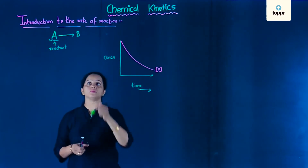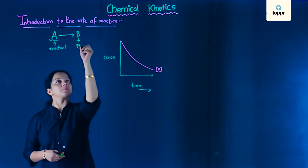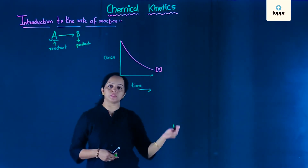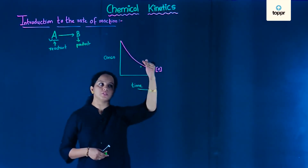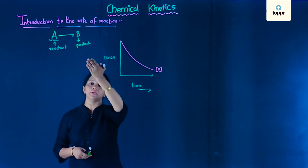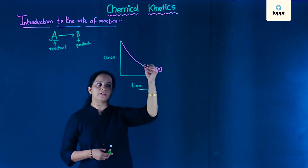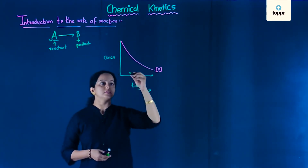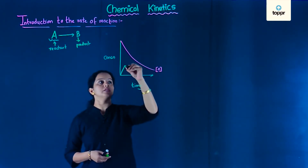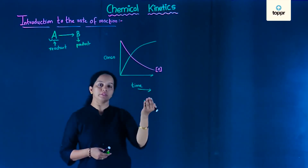Now, what happens to the concentration of B, which is the product? Reactant's concentration goes on decreasing because reactant gets converted to product. Hence, concentration of product was initially zero and as the time proceeds, concentration of product goes on increasing with time.